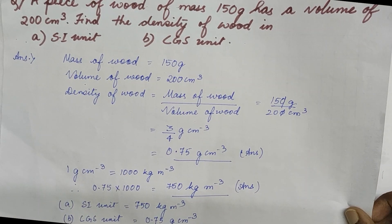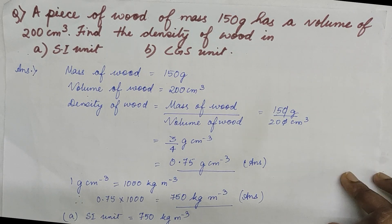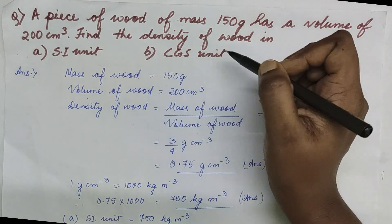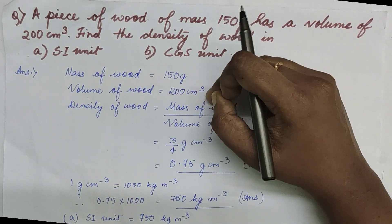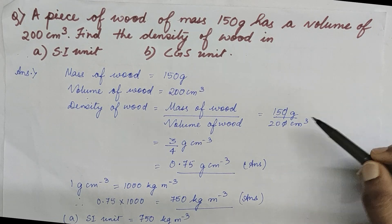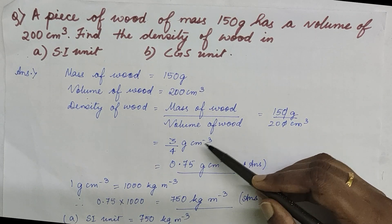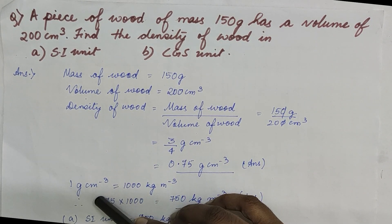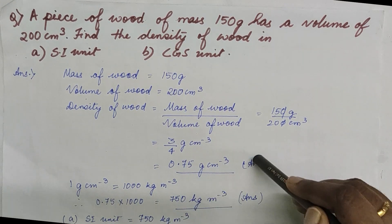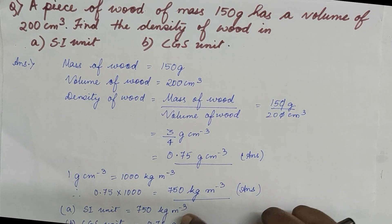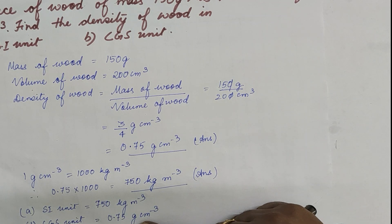Here is a numerical example: A piece of wood of mass 150 grams has a volume of 200 cm³. Find its density in both SI and CGS units. Density = mass/volume = 150 g ÷ 200 cm³ = 3/4 = 0.75 g/cm³ (CGS unit). Since 1 g/cm³ = 1000 kg/m³, we multiply: 0.75 × 1000 = 750 kg/m³ (SI unit). So the CGS unit is 0.75 g/cm³ and the SI unit is 750 kg/m³.